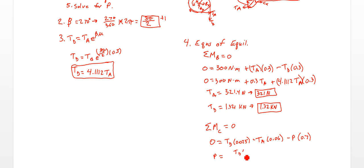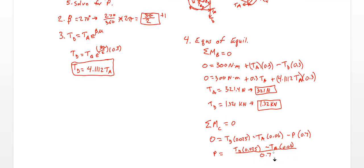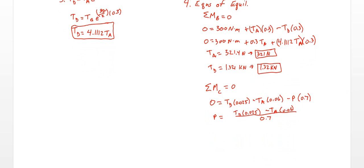So we have P equals TD times 0.025 minus TA times 0.06, all over 0.7. Substituting these values of TA and TD into that, I find P equals